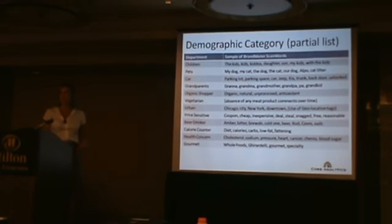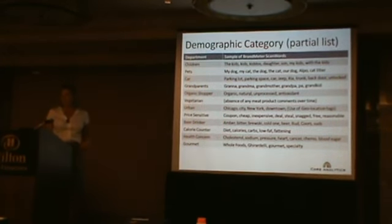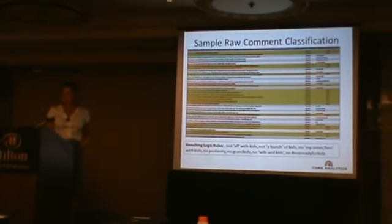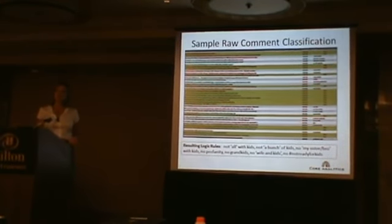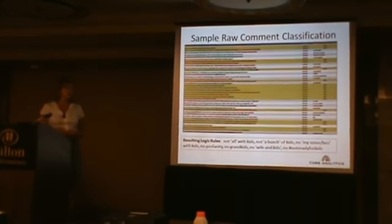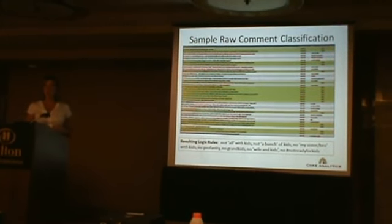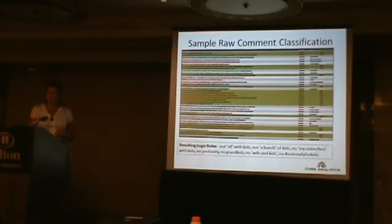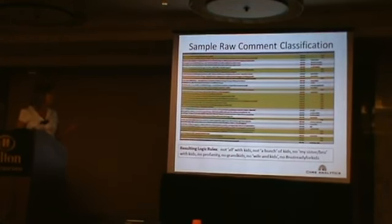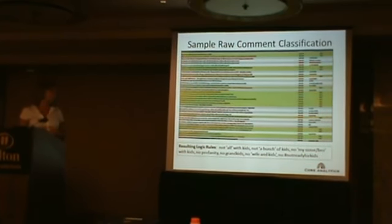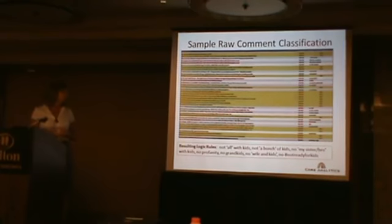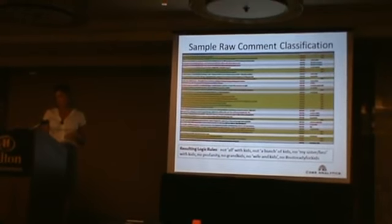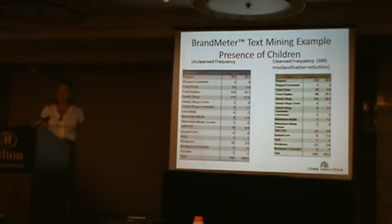The same process applies to demographic categories. You might be interested if your consumers have children, pets, what kind of car they have, if they're grandparents, organic shoppers, vegetarians, beer drinkers, et cetera. In this example, we look at kids. In every category, the misclassification is very different — kids is actually much more accurate than certain other codes. About 50%, based on the keywords we put in, were classified correctly. Then with stop word lists — taking out all instances of profanity, removing references like 'my brother's kids,' 'my grandkids,' or 'my wife and kids' — you can further reduce the misclassification, in this case by 34%.